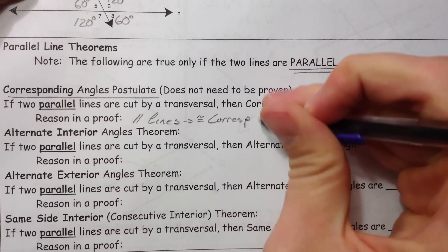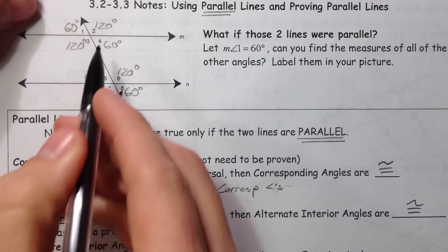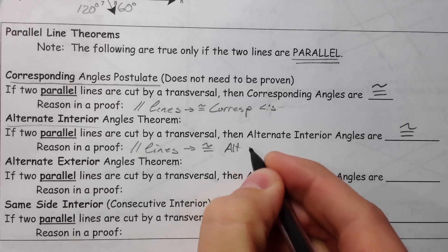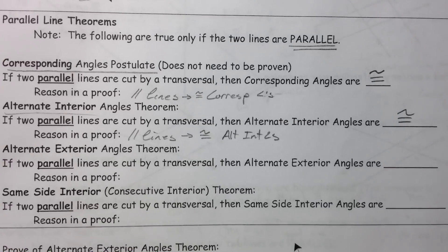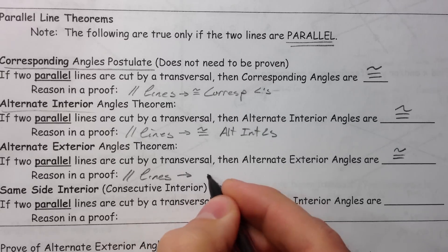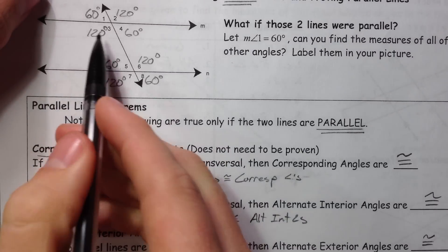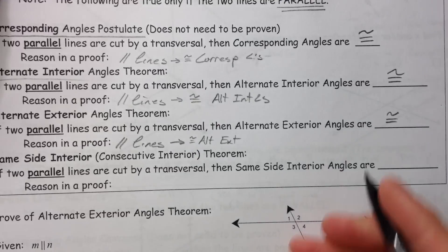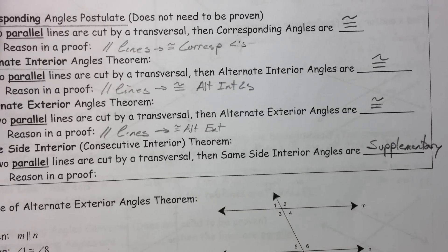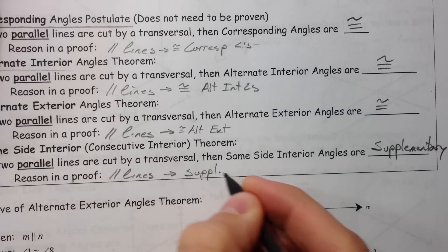Alternate interior angles are congruent — like the 120 and the 120, and the 60 and the 60. Parallel lines imply congruent alternate interior angles. Alternate exterior angles are congruent — so in a proof, if I have parallel lines, then I know that alternate exterior angles are congruent. And same side interior angles, like the 120 and the 60, are supplementary. So parallel lines tell me supplementary same side interior angles.